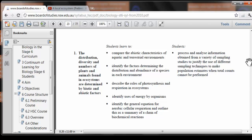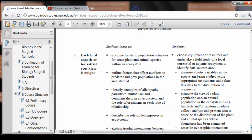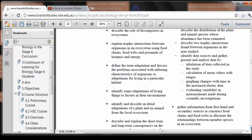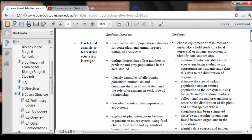So if you look at the Board of Studies, this is where we have our syllabuses. This is the actual chapter we're covering: each local aquatic or terrestrial ecosystem is unique. And you can see here the dot points. These are the actual syllabus dot points that get covered in the videos. So every school has to cover these, and we cover them as well in the videos here.